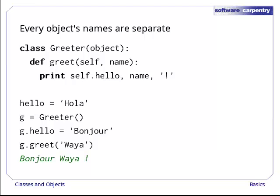It's important to understand that every object carries around its own variables, just as every variable inside a function called stack frame is distinct from every other. This example shows why that matters. As before, it creates a class and an object of that class. This time, though, we also create a variable hello in our main program. When the method is called, we print bonjour instead of hello because the object uses its hello, not the one defined in the top level of the program.